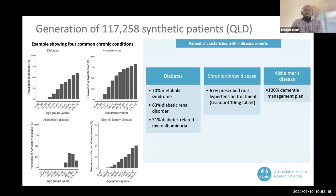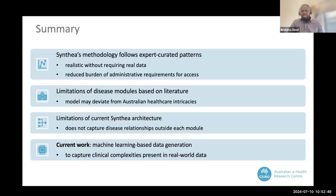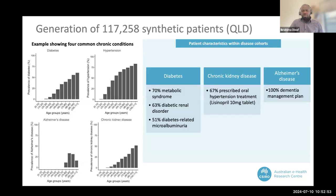We have 51% of diabetes patients with microalbuminuria, which is a protein detected in the urine. We also checked carefully patients with chronic kidney disease — 63% had a prescription for hypertension treatment at some point, because chronic kidney disease is closely related to hypertension and can be one of its complications. For Alzheimer's disease, 100% of patients had a dementia management plan, which also makes sense in real life.